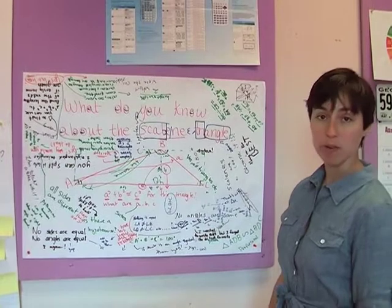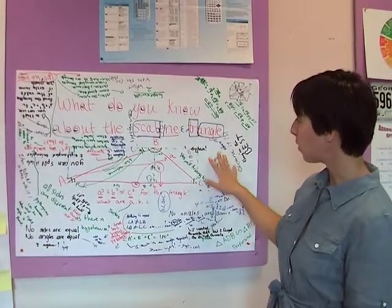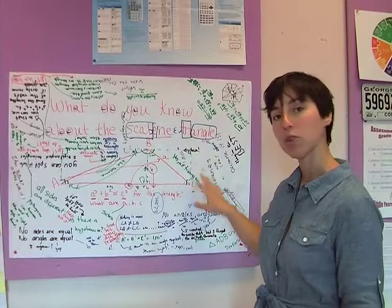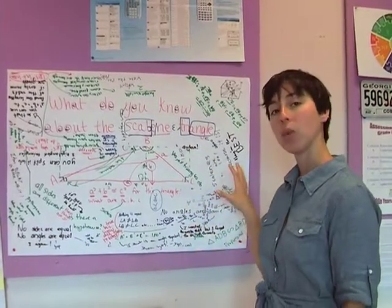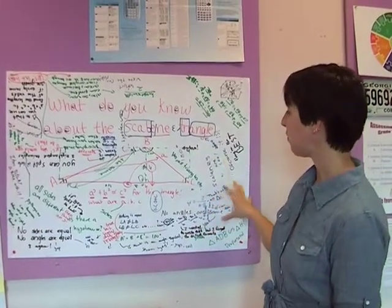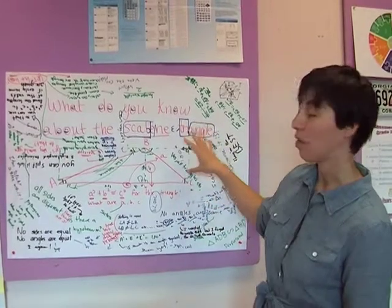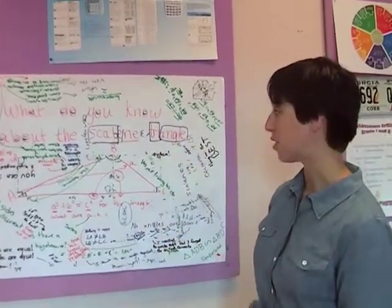As they went around as well, this one was about scalene triangle, but they also had one about trigonometry and the right triangle. And they made connections back to those as well as they circled.